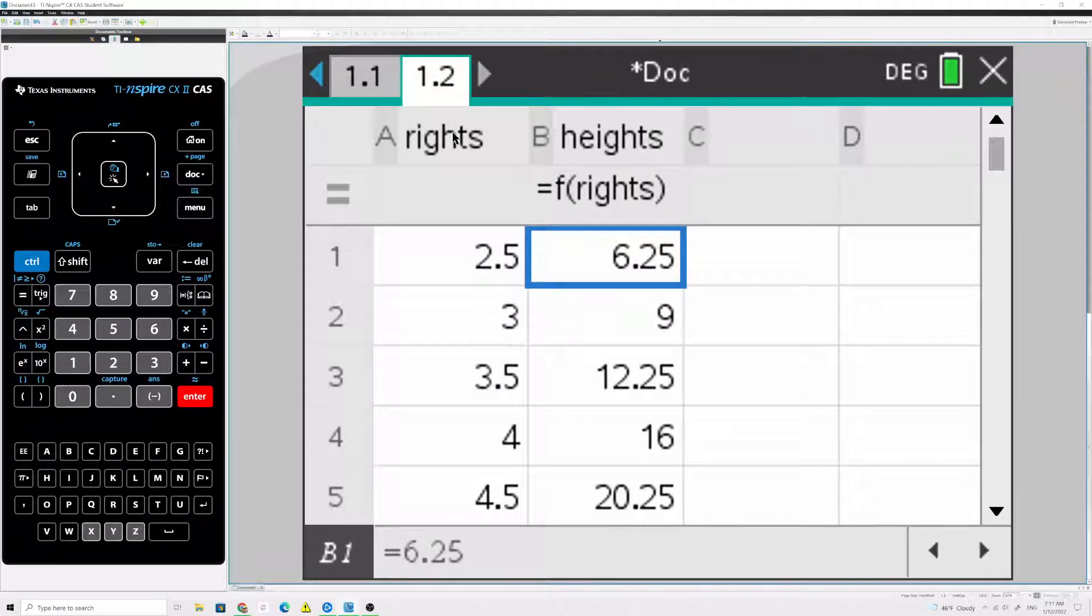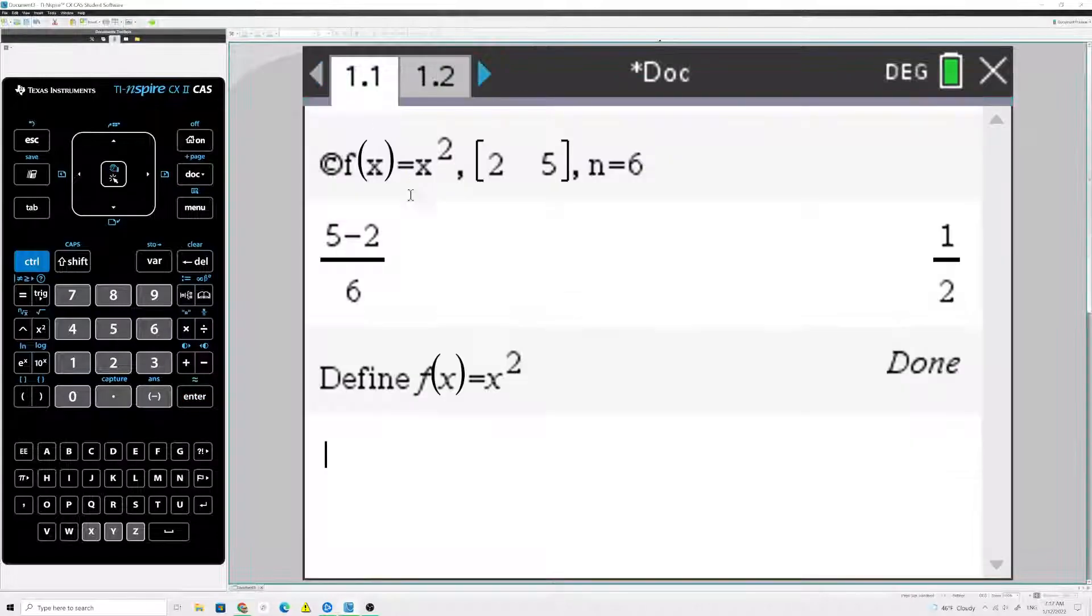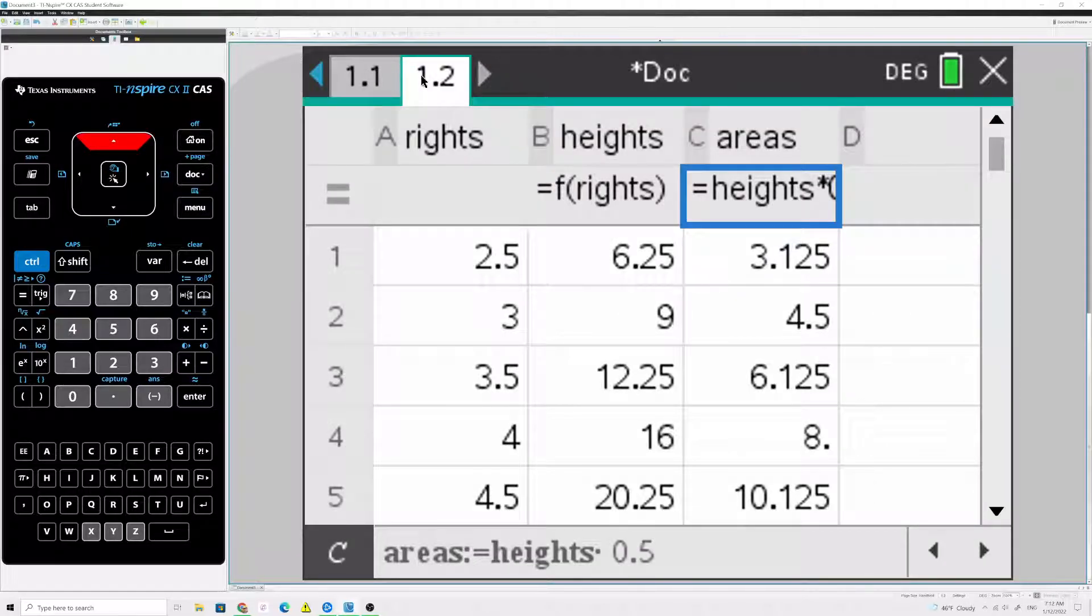So there's the function value at all of the right endpoints. So, now I want the area of each rectangle, and the area of the rectangle is the height of the rectangle, which I have stored in the column named heights. And I have to multiply by the width. Well, we calculated that on the first page. The width of each rectangle was 0.5. Go over just a second. That was this calculation. 5 minus 2 over 6 was a half. That's the width of each subinterval.